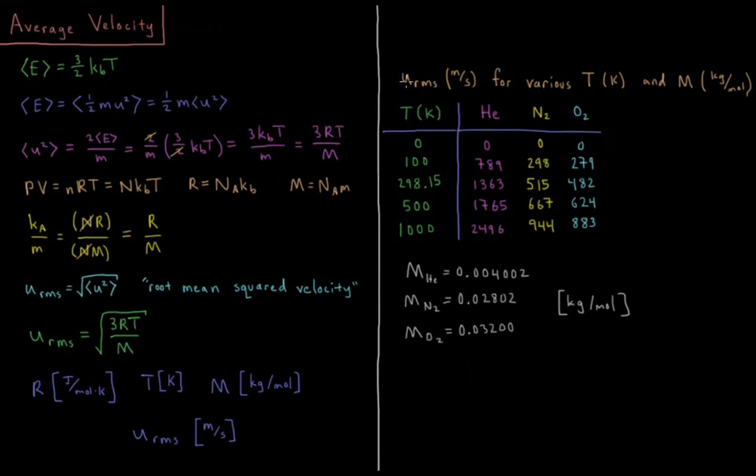So what is the v_rms in meters per second for various temperatures and gases? If we substitute in the values: for helium, the molar mass is 0.004002 kilograms per mole; for N2, 28.02 grams per mole or 0.02802 kilograms per mole; and 0.032 kilograms per mole for oxygen. So substituting in those values here for various temperatures.